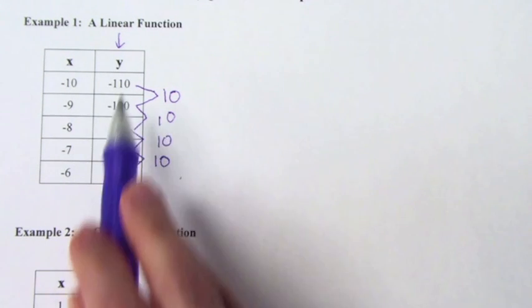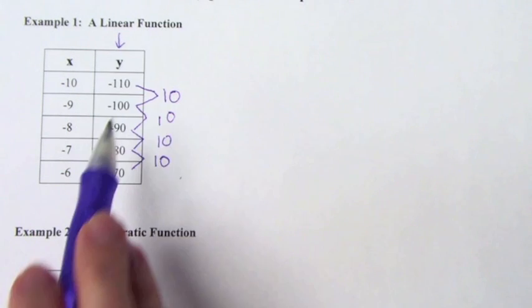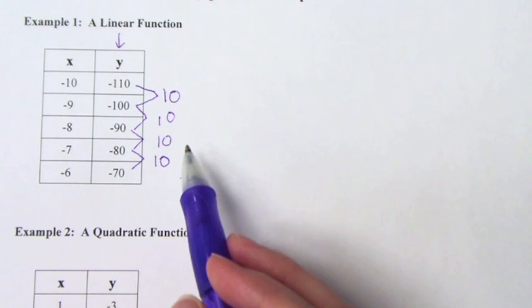That is what a linear set of data will look like. I kind of gave you the answer on these because it says in the example a linear function. We already knew it's linear. I just wanted you to see how did we know it was linear, and that's how we know it's linear.